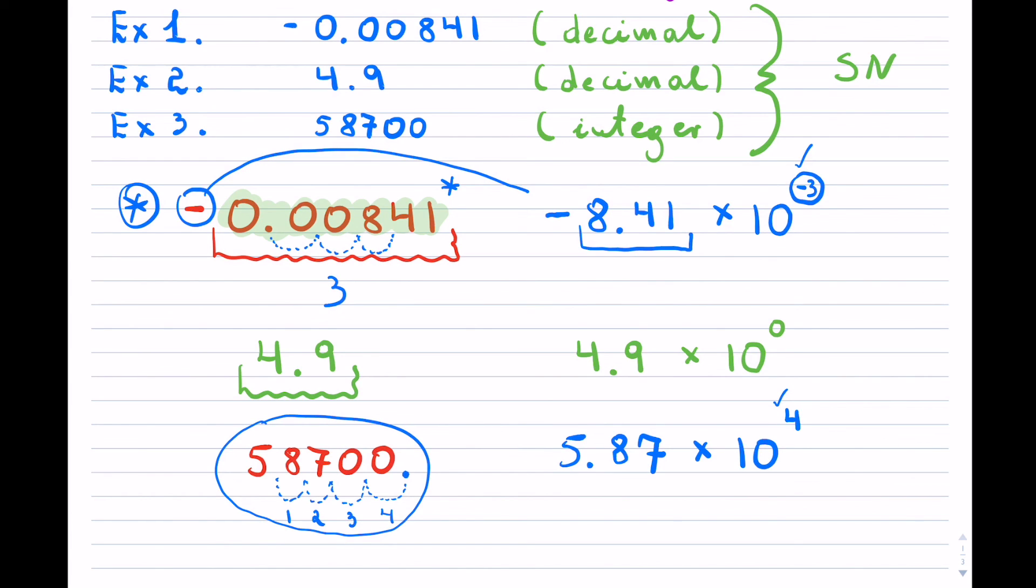So I hope this is helpful. These are typically the three variations from converting from decimal or an integer to scientific notation. Thank you for watching.